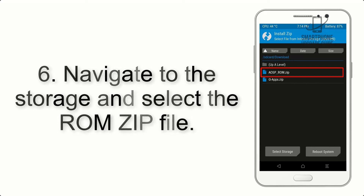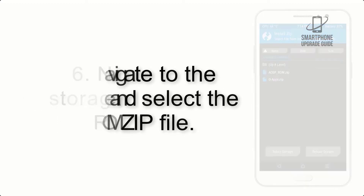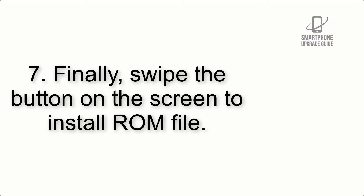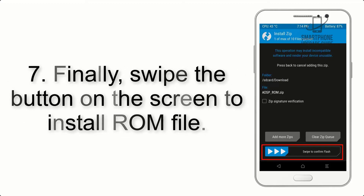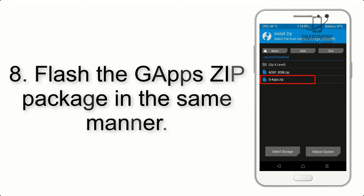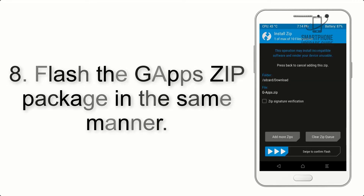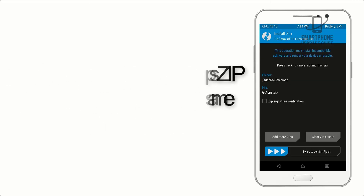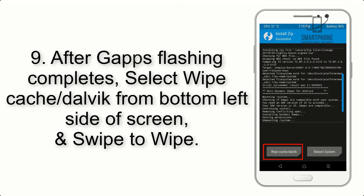Step 5: Go back to the recovery main screen and tap on the Install button. Step 6: Navigate to the storage and select the ROM zip file. Step 7: Swipe the button on the screen to install the ROM file.